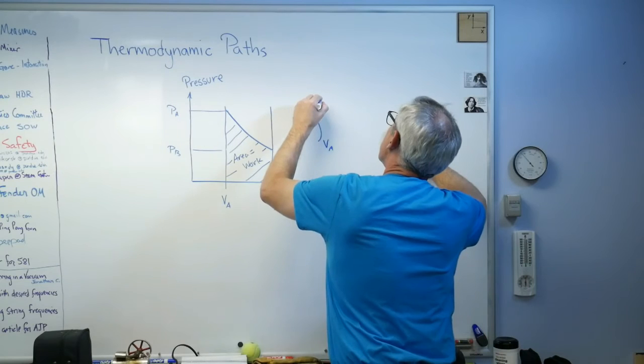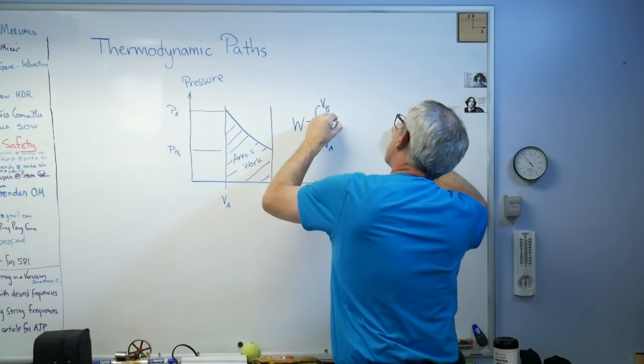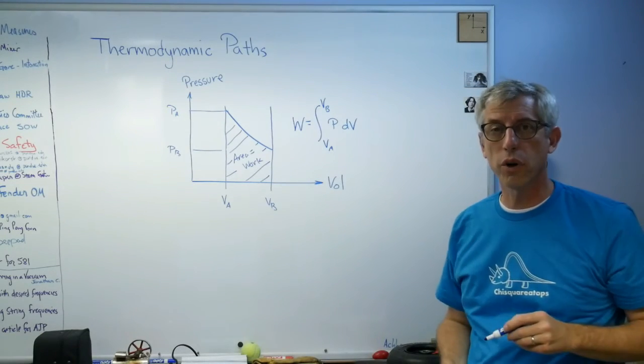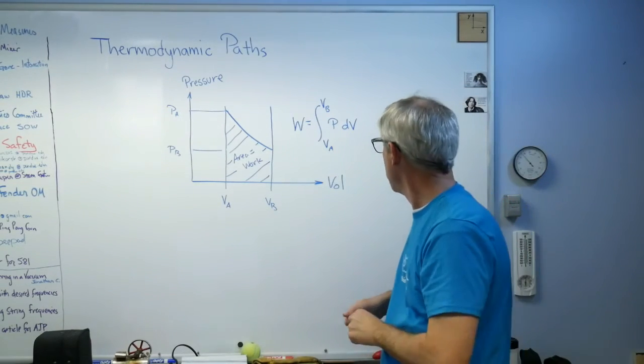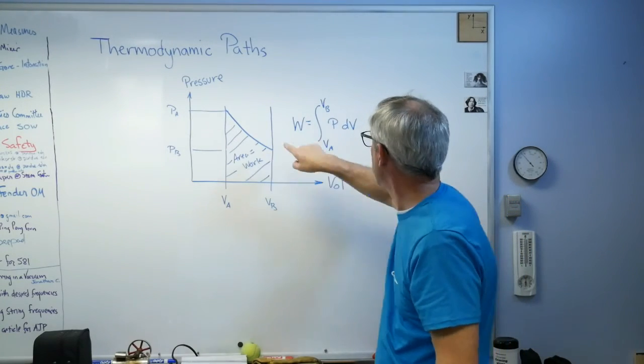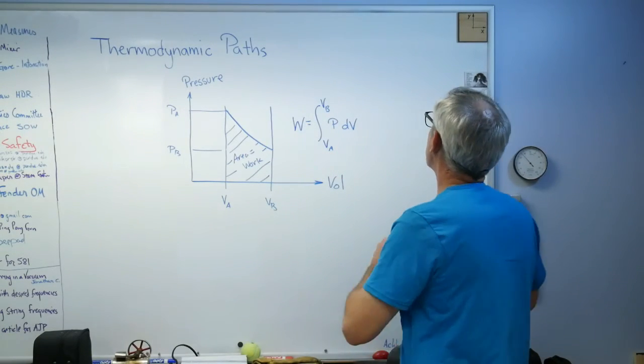All right, Va to Vb, pressure dV. That's the expression for the work required to change pressure. Now is P a constant here? No, that's the whole point. It's not a constant. You have to be able to write P as a function of volume.